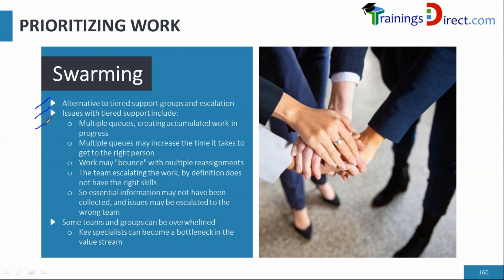In tiered support, there are multiple queues — some tickets handled by level one, some by level two, some by level three — which can cause confusion and accumulation of work. Because multiple groups are involved, it increases the time to reach the right person. For example, a level-one agent may be unsure whether to escalate to the database group, network group, or information security group, causing work to bounce between teams. One group investigates and says it's not their area, then it goes to another, and so on — it keeps bouncing back.